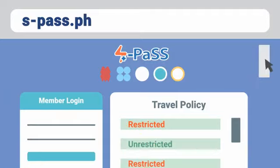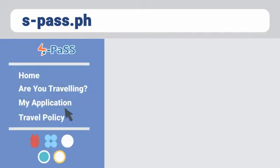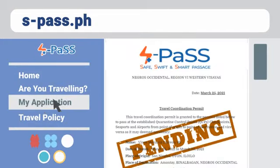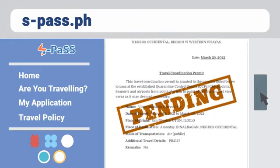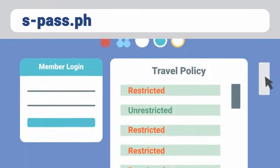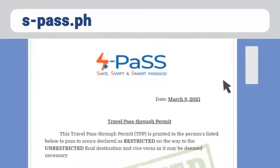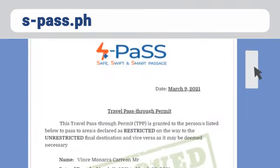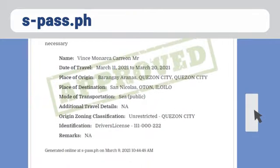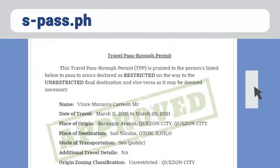Step 3: Apply for your travel documents. You will need to apply for a Travel Coordination Permit, or TCP, when traveling to a restricted LGU. If you're traveling to an LGU with unrestricted travel policy but passing through areas with strict travel protocols, we recommend you to generate a Travel Pass-Through Permit, or TPP, to be presented to the appropriate authorities when requested.